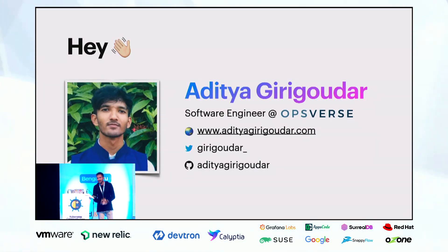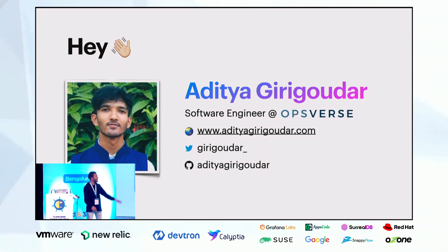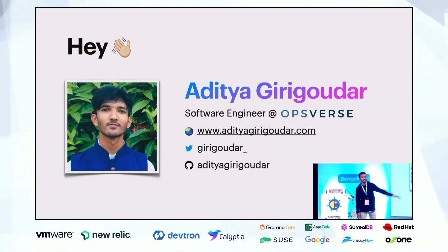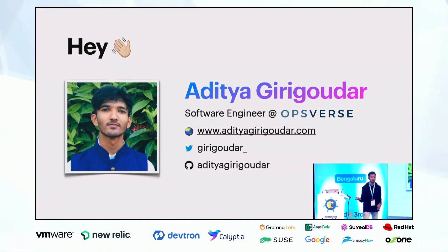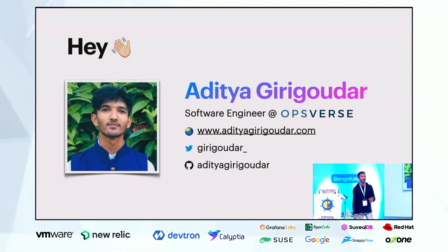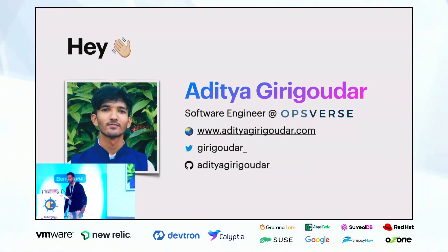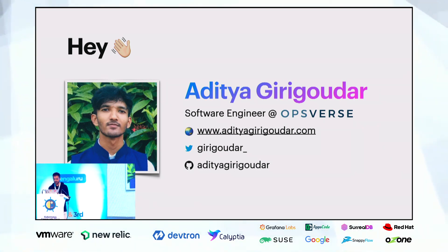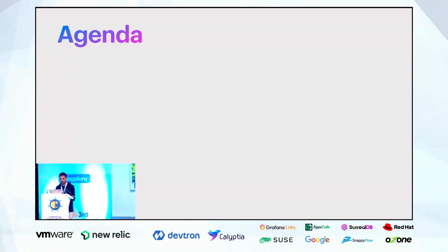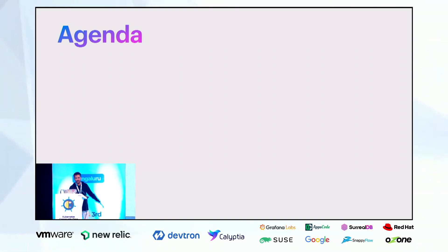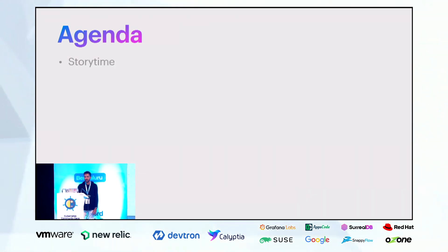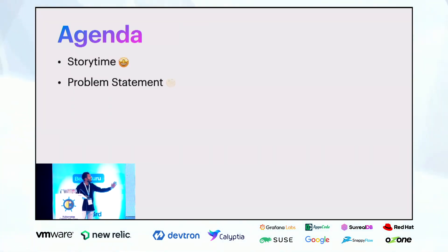Namaste folks, my name is Aditya Girigauder. I'm currently working as a software engineer at Opsource, where we build open source DevOps tools for observability, CI/CD, Backstage, and Postdoc. Those are my social links and personal website. Let's get through the agenda first.